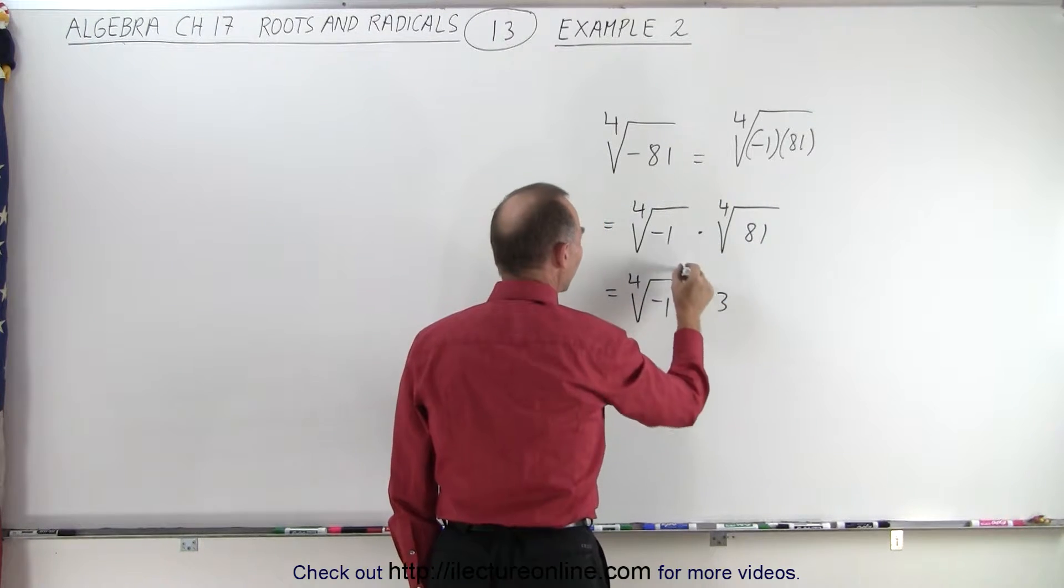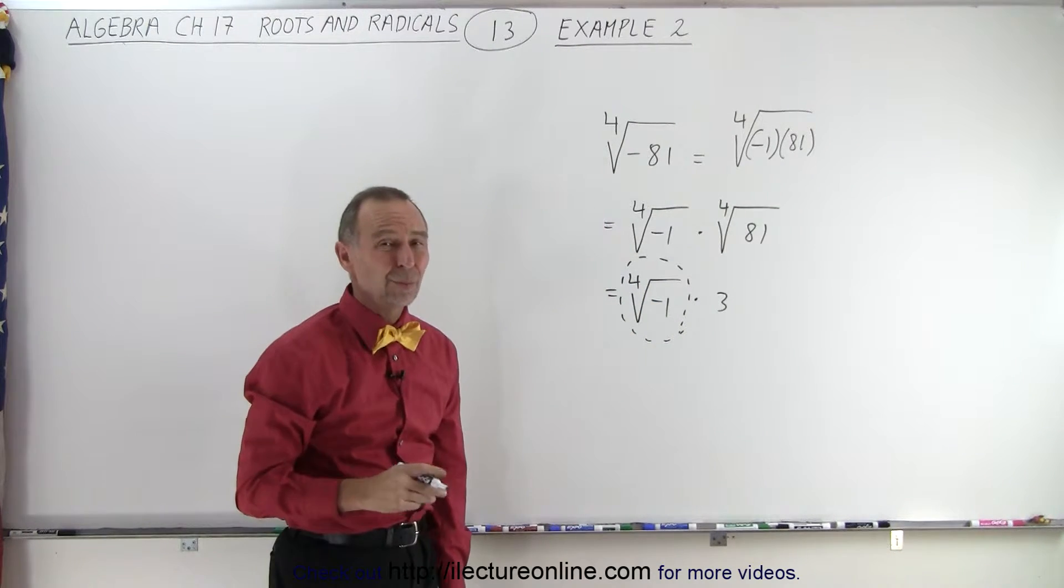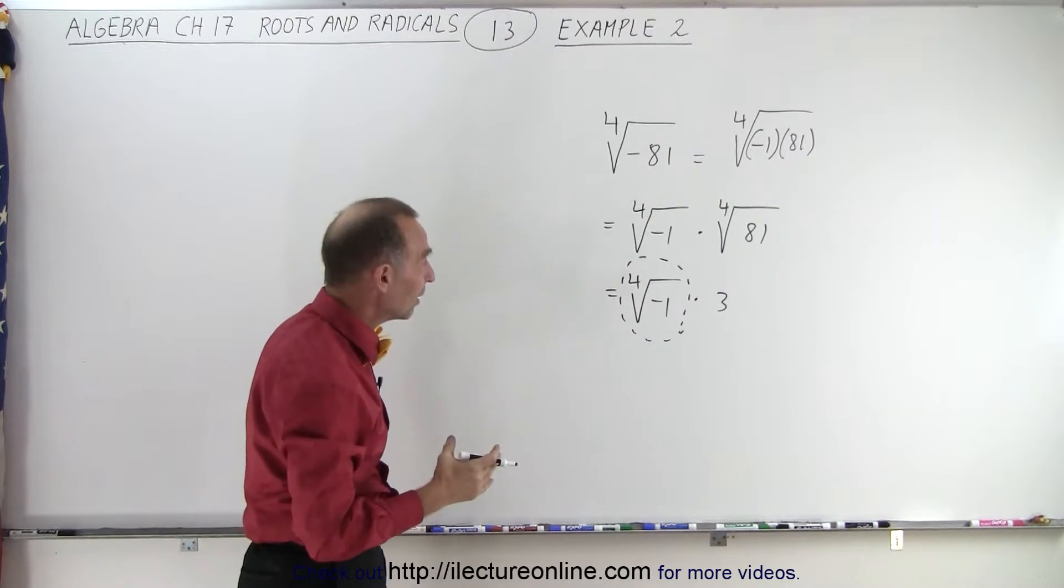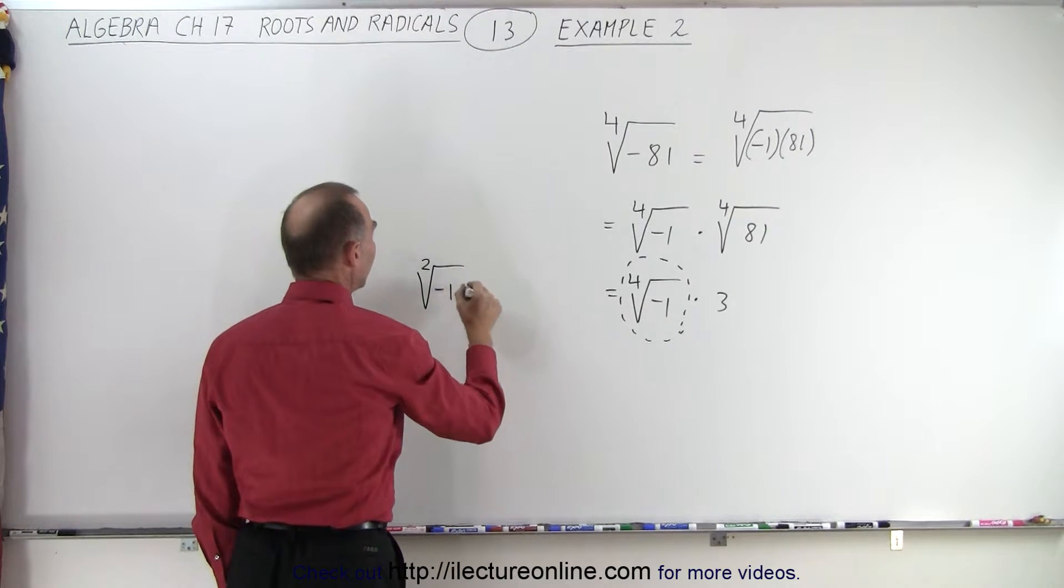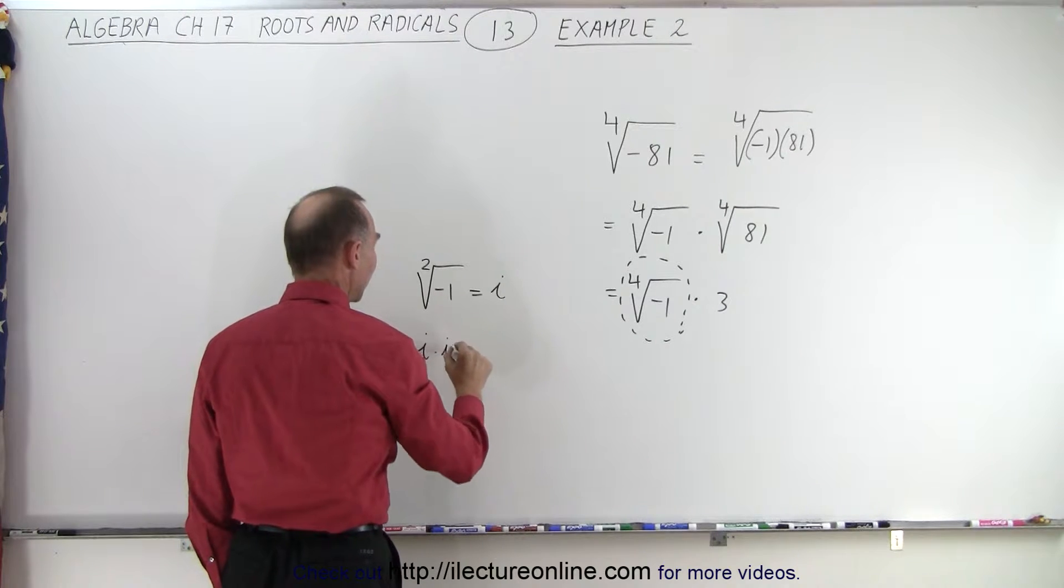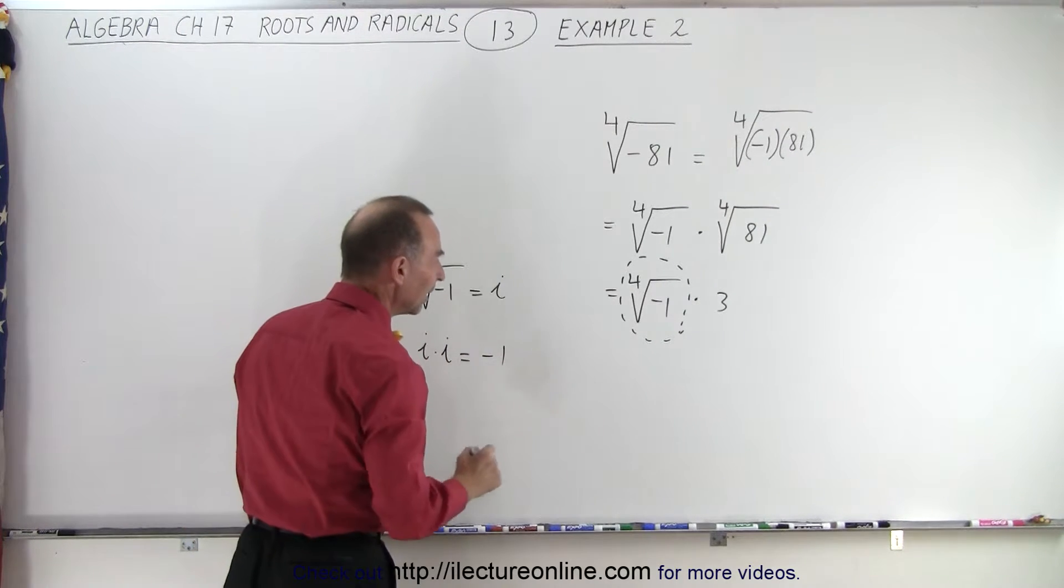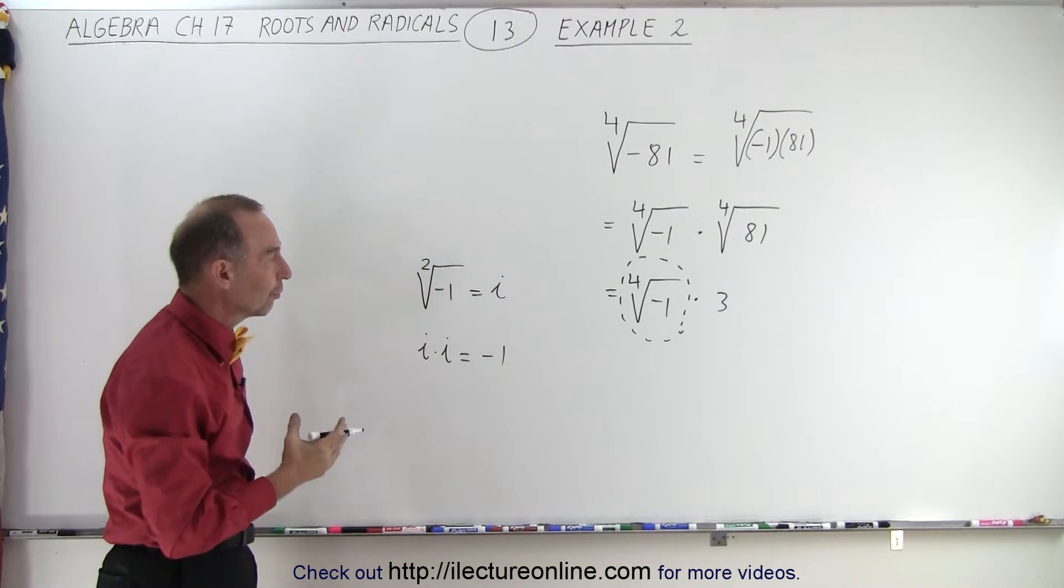But the problem is, how do you figure out the fourth root of a negative 1? Well, we really don't have any solution to that. We know that the square root of negative 1, that's equal to i by definition because we know that i times i is equal to negative 1. But the fourth root of negative 1, we do not have any solution for that.